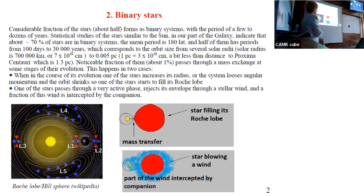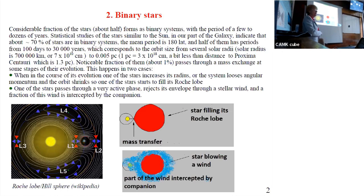The second case is when the star does not quite fill the Roche lobe, but is not too far from it. If the star has a wind, the companion can intercept a part of this wind and we can have accretion in that way.